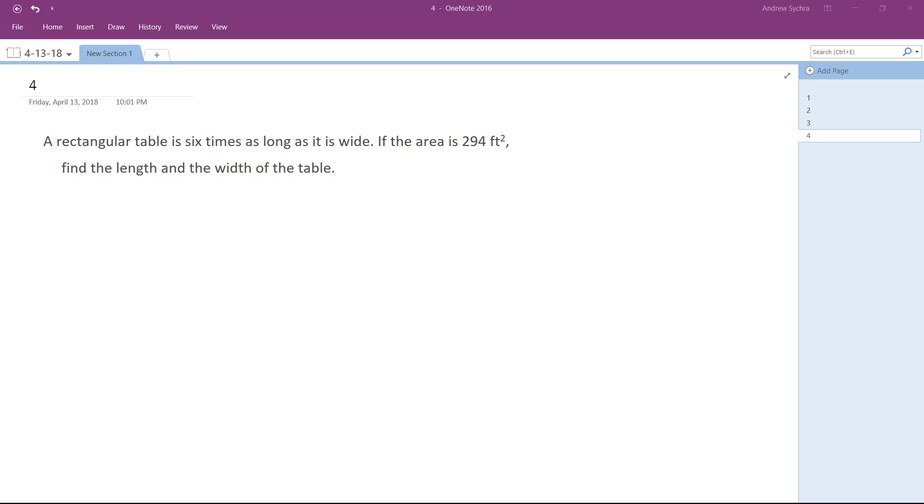Alright, so a rectangular table is 6 times as long as it is wide. So we'll just do something like this. It has an area of 294, so 294 feet squared. Find the length and widths.